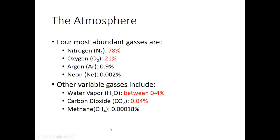Then there are variable gases. The three main ones are water vapor, carbon dioxide, and methane. These can change a lot from place to place and time to time, depending on weather conditions. For example, if it's really humid outside, water vapor may be closer to 4% of what's in the air — though that 4% is really extreme. In most cases it's going to be lower, and the air is a lot drier.